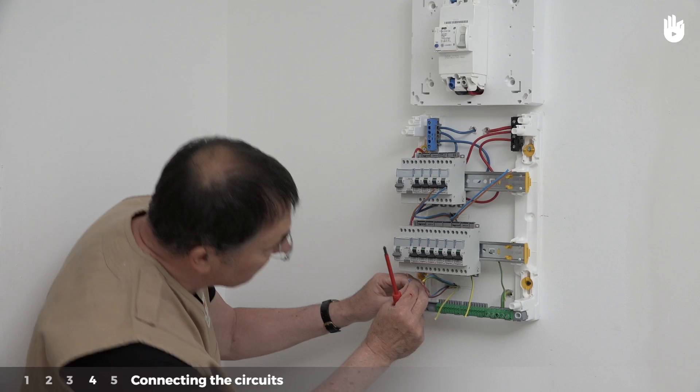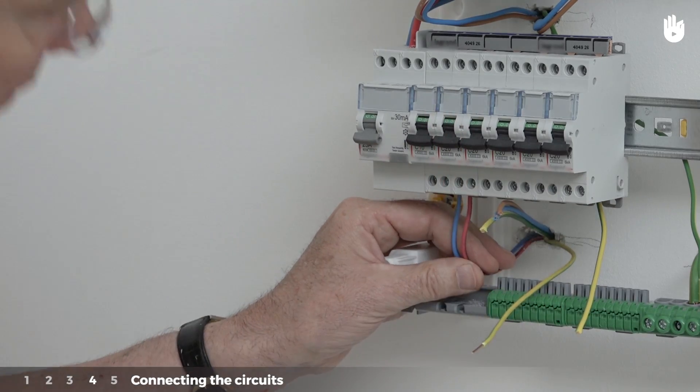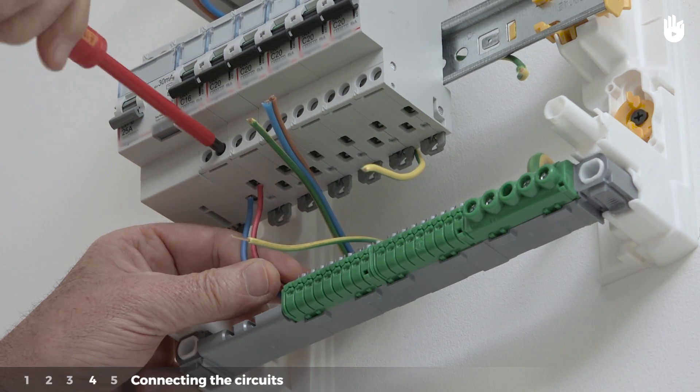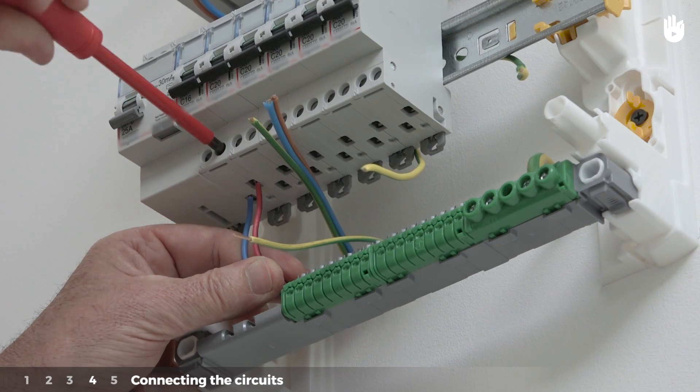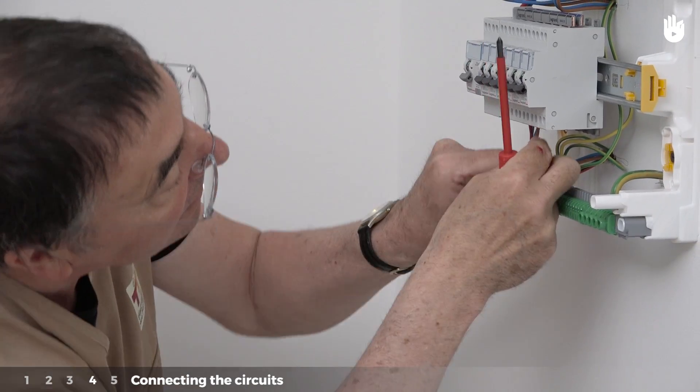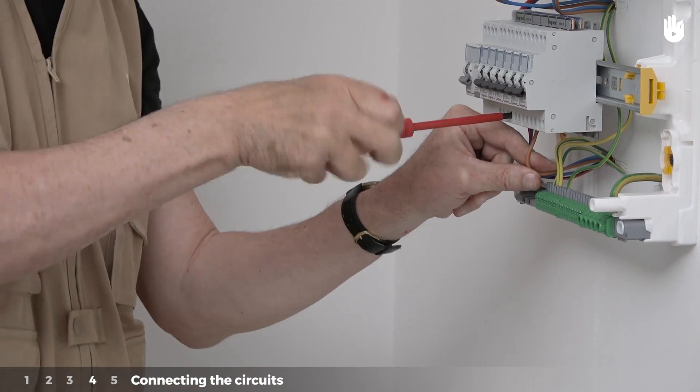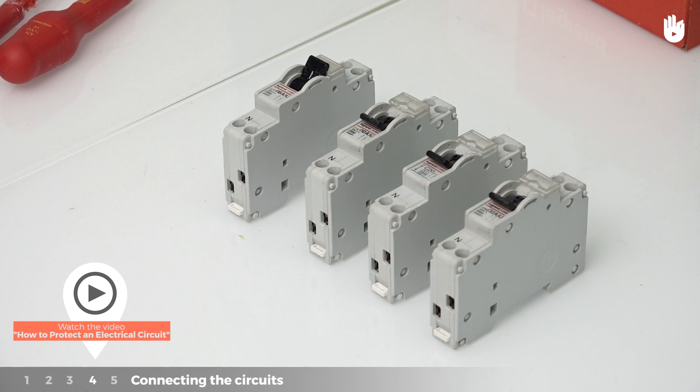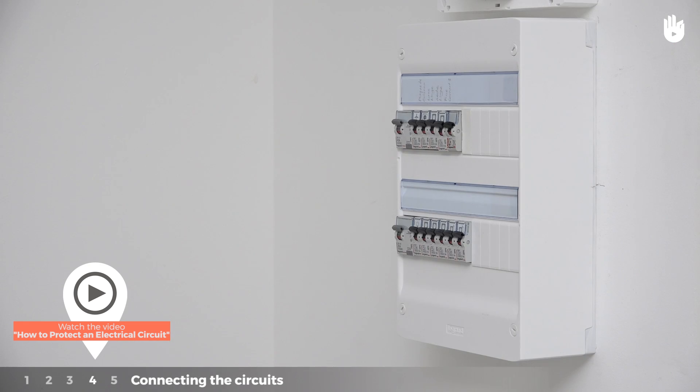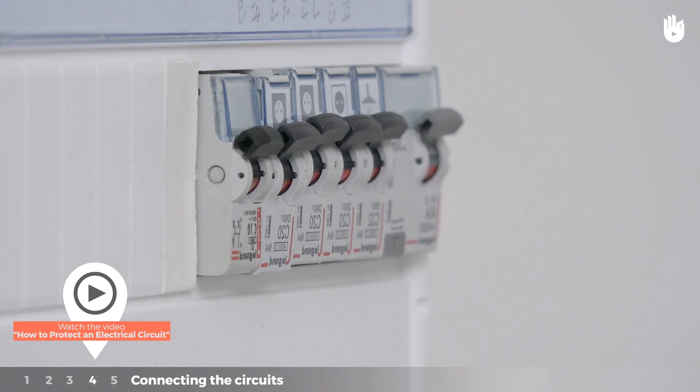Then connect the various electrical circuit conductors at the bottom of each corresponding circuit breaker. Put them into the terminals and screw in the screws for the terminals. Repeat these steps for each circuit. To find out which circuit breaker to attribute to each circuit, please watch the video How to Protect an Electrical Circuit.